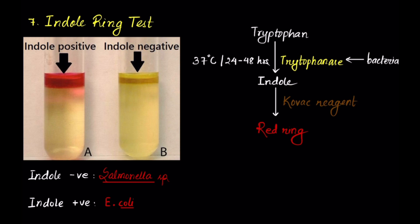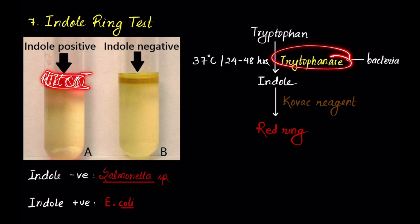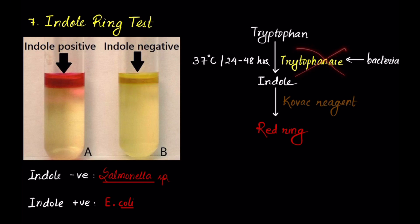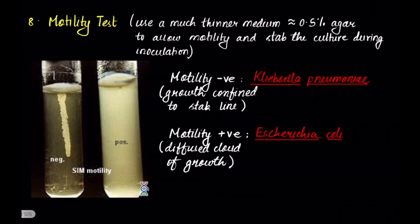Next is the indole ring test. The reagent is tryptophan. Bacteria is inoculated into this reagent. If the bacteria produces tryptophanase enzyme, tryptophan gets converted to indole. Addition of Kovac's reagent to this indole leads to the formation of a red ring. A red ring indicates indole positive — the bacteria produced tryptophanase enzyme. No red ring means the bacteria did not produce tryptophanase — that is indole negative.